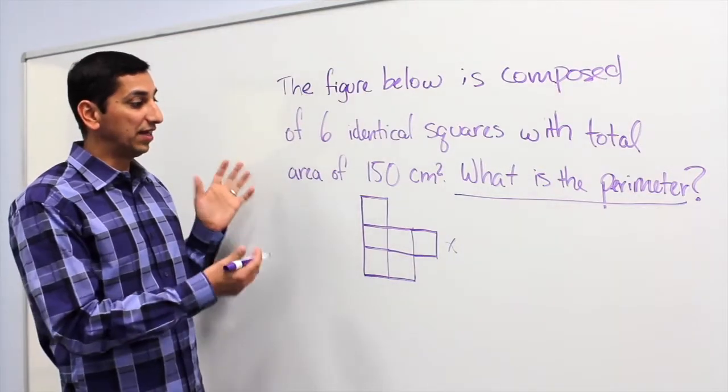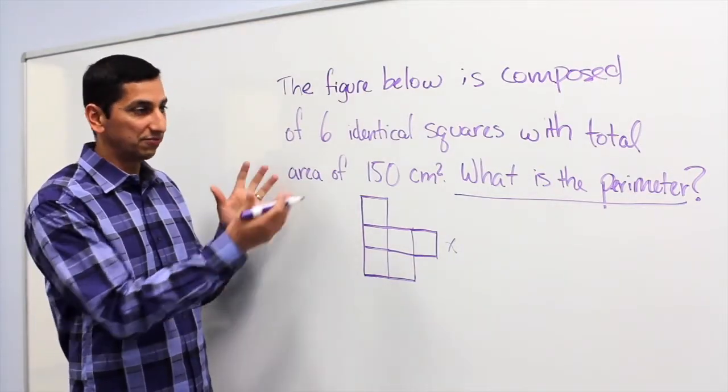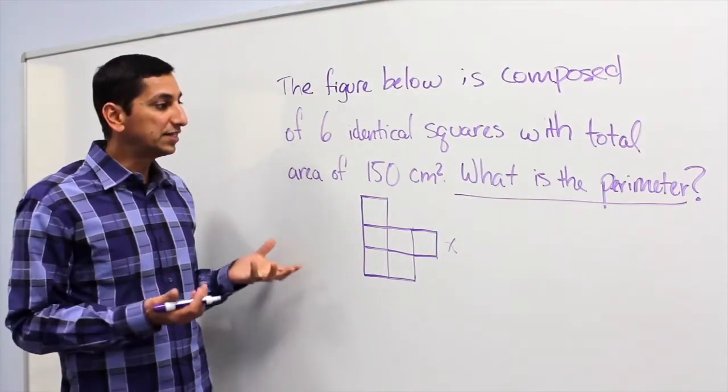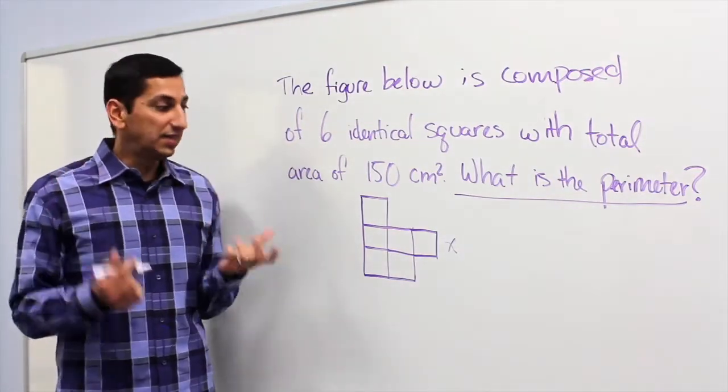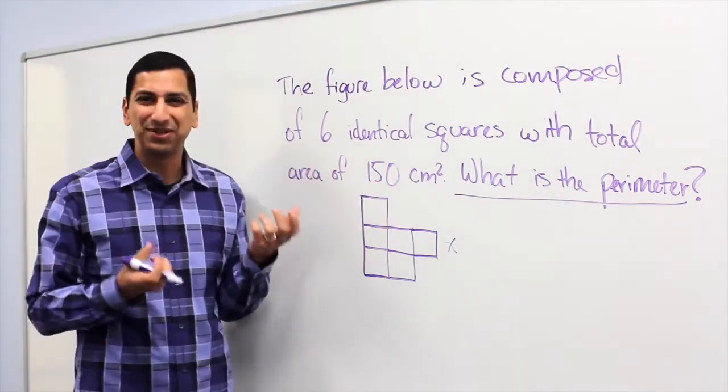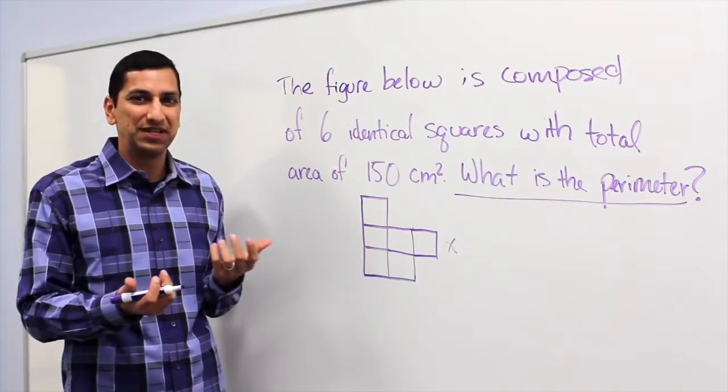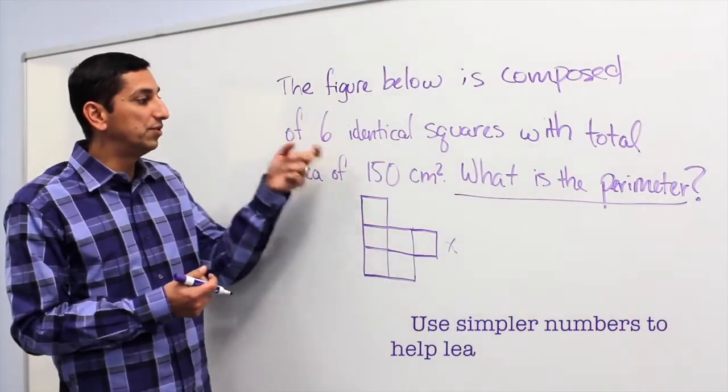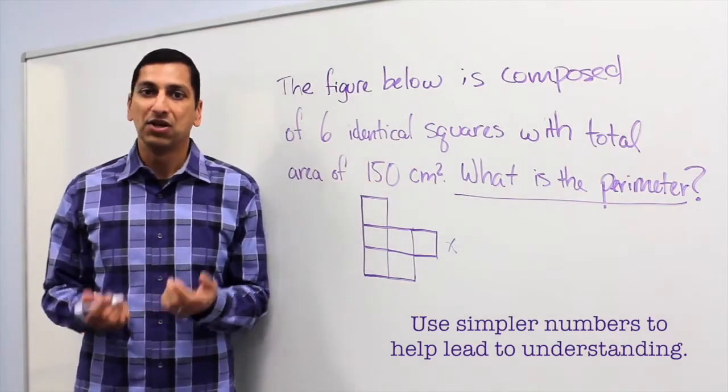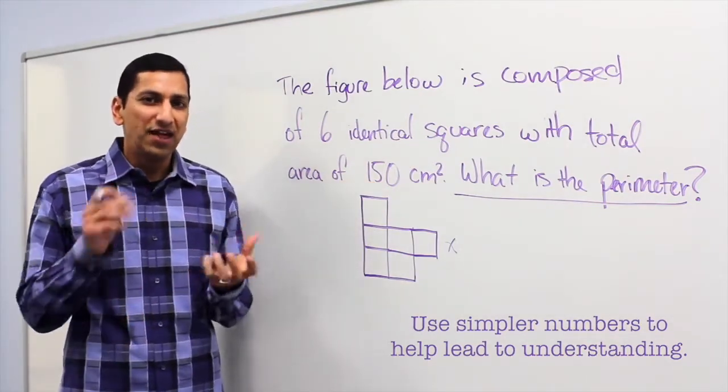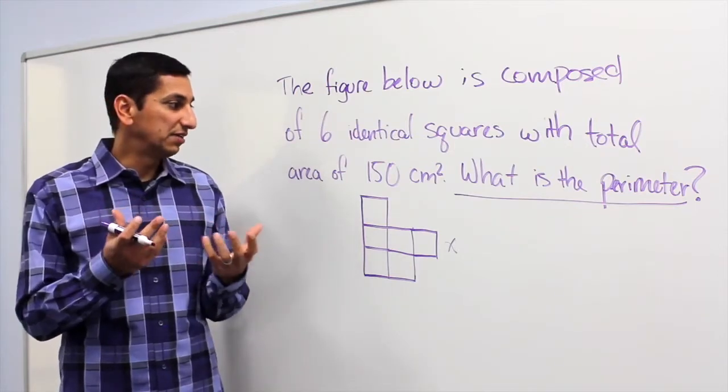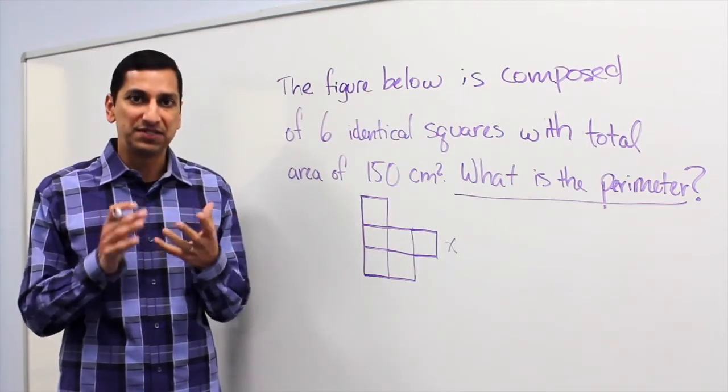Now, maybe your child doesn't see that division is the sort of thing that they need to do next to figure out how big one of those squares is. So the next thing you can do is take these numbers that I don't really have a sense of how 6 and 150 sort of relate to each other. Let me change it to 2 and 10. What if it was 2 squares with an area of 10 square centimeters? Well, when you do that, now those are numbers that sort of make sense to me. I know that 2 goes into 10, 5 times, so I have some sense of what's going on.